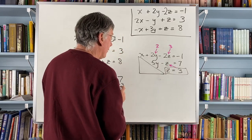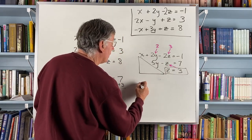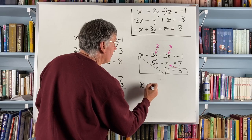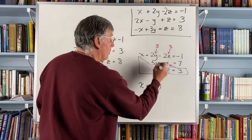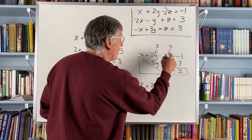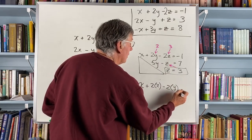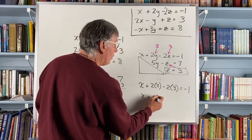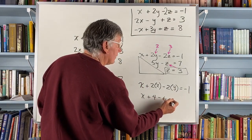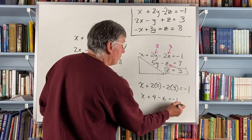And I'm going to say then that x, to solve finally for x, x plus 2 times 2 minus 2 times 3 equals minus 1. That means that x plus 4 minus 6 equals minus 1.